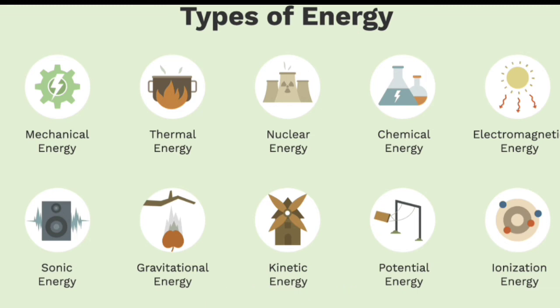Mechanical energy is the energy that is possessed by an object due to its motion or due to its position. Thermal energy refers to the movement of molecules within an object or substance. Nuclear energy can be used to create electricity but it must first be released from the atom. Chemical energy is the energy of chemical substance that is released when they undergo a chemical reaction and transform into other substance.